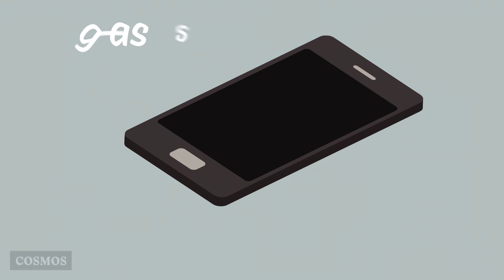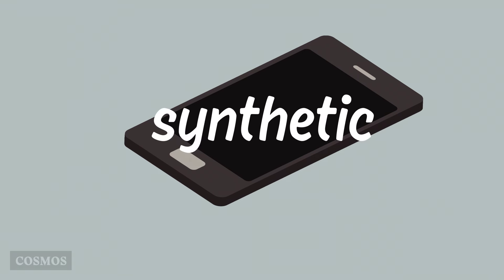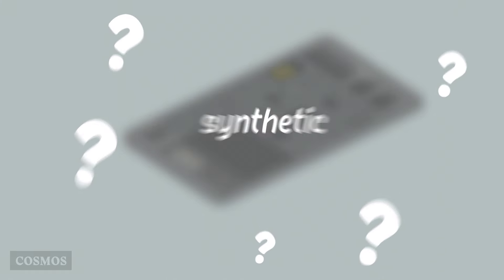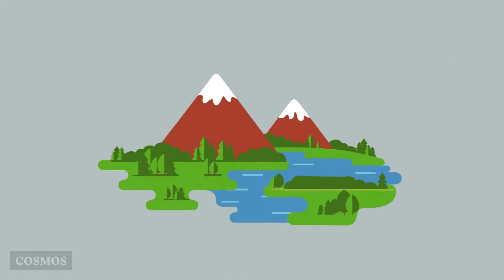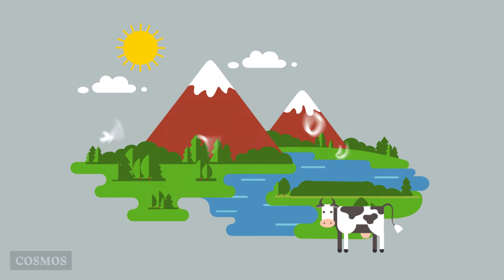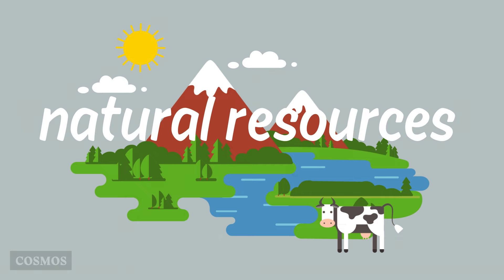Resources which are made out of other materials are called synthetic. But where do the materials come from? If you trace them back far enough, you'll always end up with things that we find in the natural world. These are called natural resources.